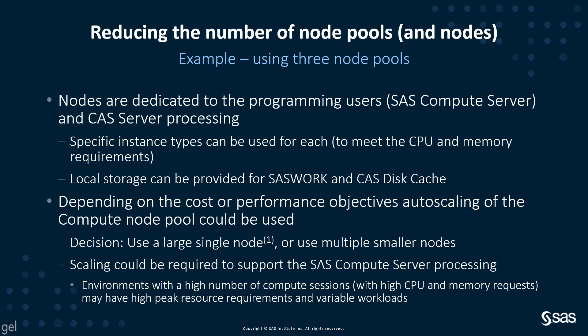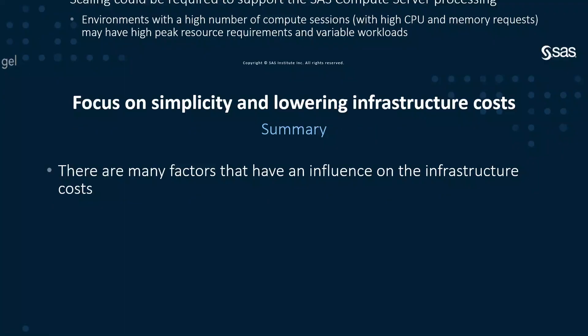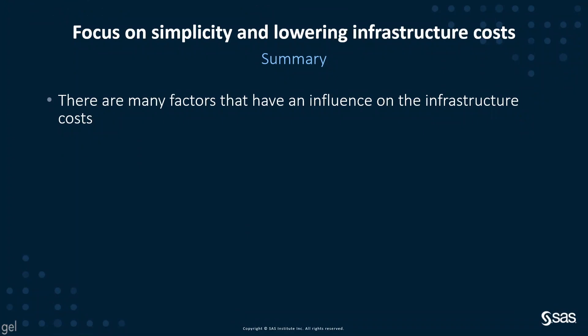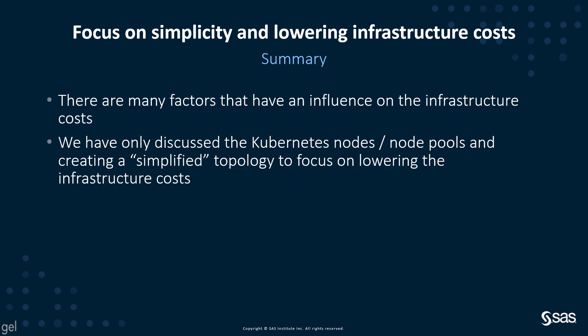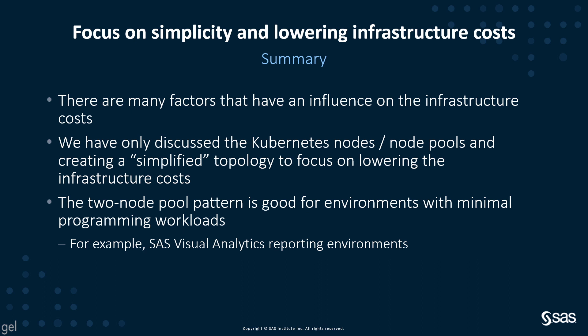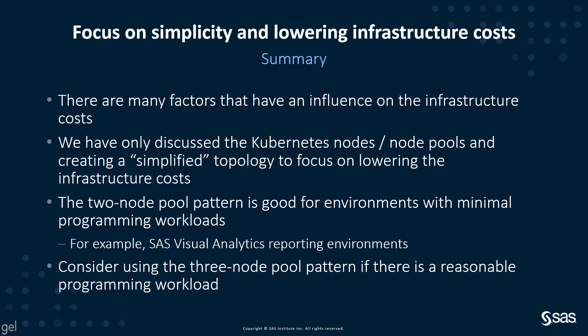To summarize, there are many factors that influence infrastructure costs. We have discussed Kubernetes nodes and node pools and creating simplified topologies to lower infrastructure costs, but storage options also need to be assessed when looking at total platform costs. The two-node-pool pattern is good for environments with minimal programming workloads — for example, reporting environments running the SAS Visual Analytics solution.